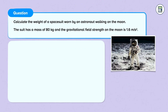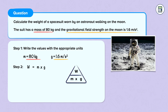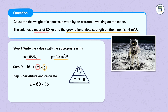Let's now see what happens to the weight of an object at a different location. Calculate the weight of a space suit worn by an astronaut walking on the moon. The suit has a mass of 80 kg and the gravitational field strength on the moon is 1.6 meters per second squared. Step 1: we write the values — mass is 80 kg, gravitational field strength on the moon is 1.6 meters per second squared. Step 2: we write our formula — W is equal to m times g. Step 3: we substitute and calculate — W is equal to 80 times 1.6, which gives us an answer of 128 newtons.